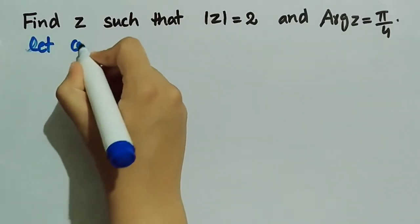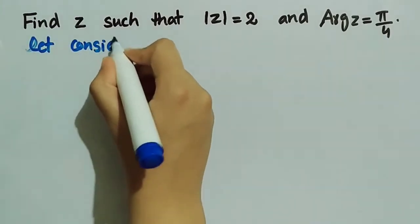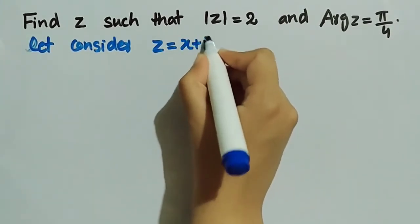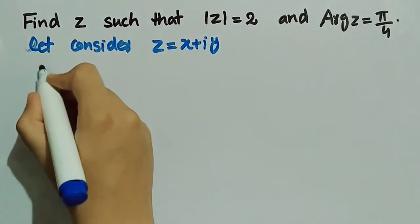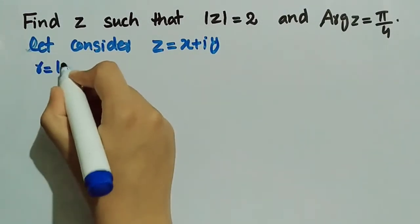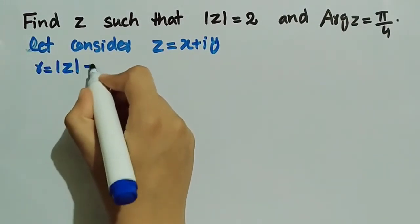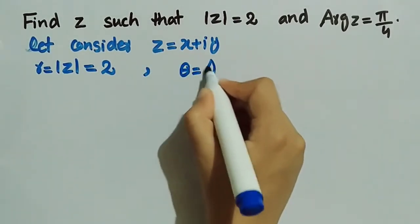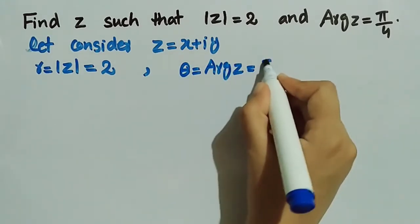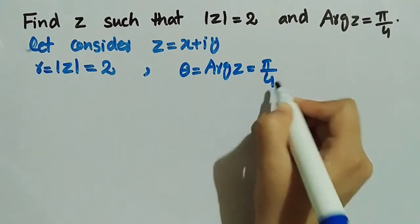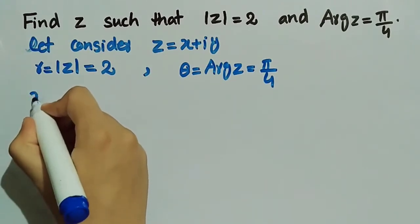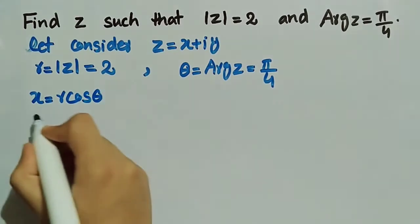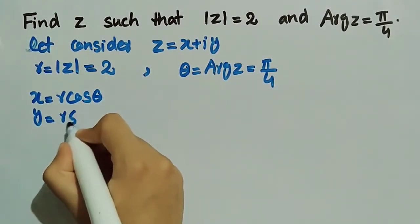Let's consider the complex number z be equal to x + iy, and it is given that r is equal to modulus of z, which is equal to 2, and θ is equal to the principal argument of z, which is equal to π/4. We know that x is equal to r cos θ and y is equal to r sin θ.